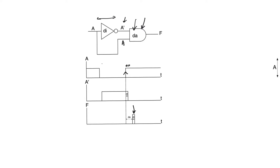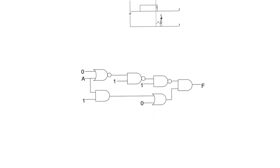Static zero hazards, like static one hazards, are always reducible to this form, but this doesn't mean you will always have such an explicit structure. Most static zero hazards occur in circuits where they are more challenging to see. Variable A takes two paths — top and bottom — meeting at the final AND gate producing output F. A appears in its complement form on the top branch and its true form on the bottom branch, with differential delay between the branches equal to the delay of one NAND gate. These are the three conditions for observing a glitch: two paths for the same variable, true and complement form, and differential delay.